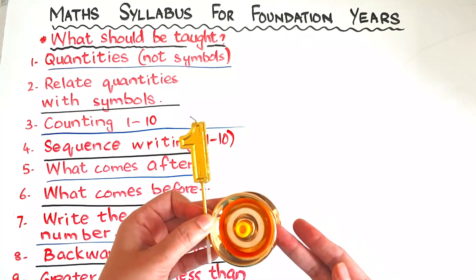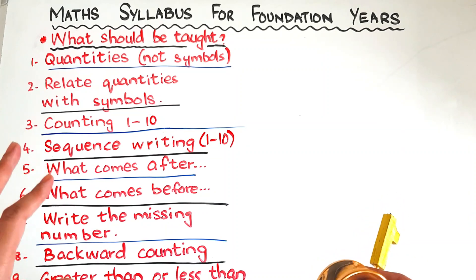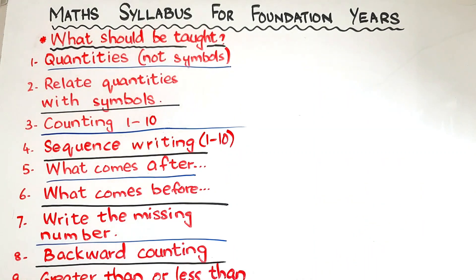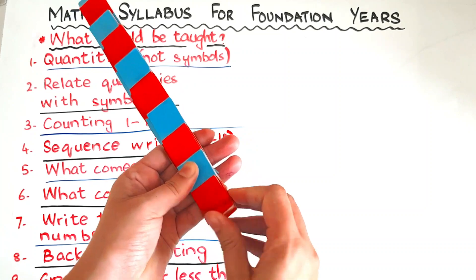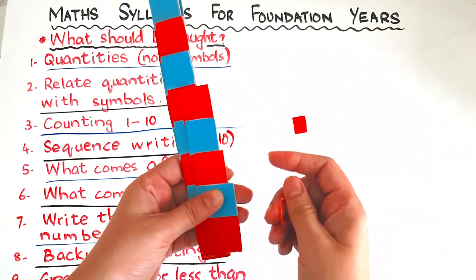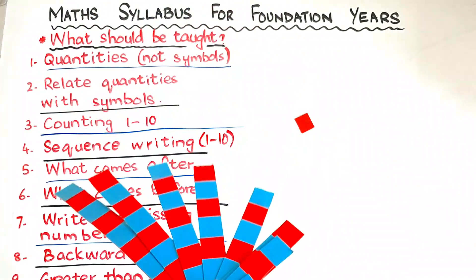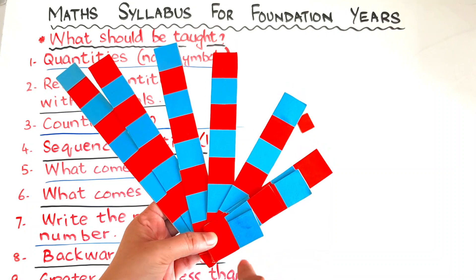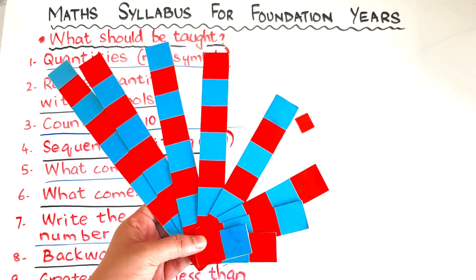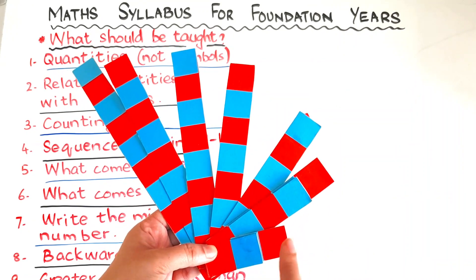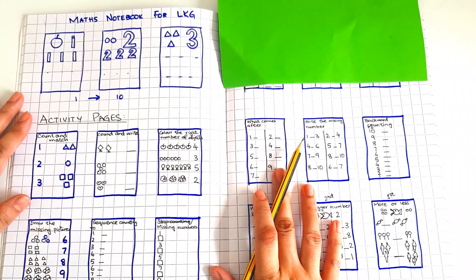This is what we call concrete concept building — you are not just giving them the number orally, you are showing the relation between the symbol and the quantity. If you want to build concrete concepts in your children's brains, there are number rods — a Montessori material. If you want to learn how to teach all these concepts with number rods, check the description box for the video on how to use and make them. It works wonders.